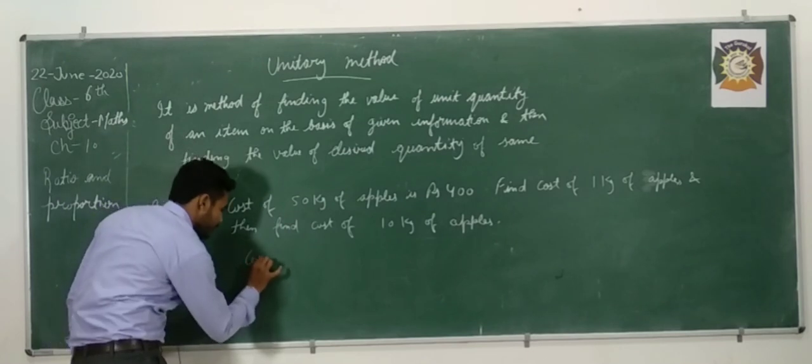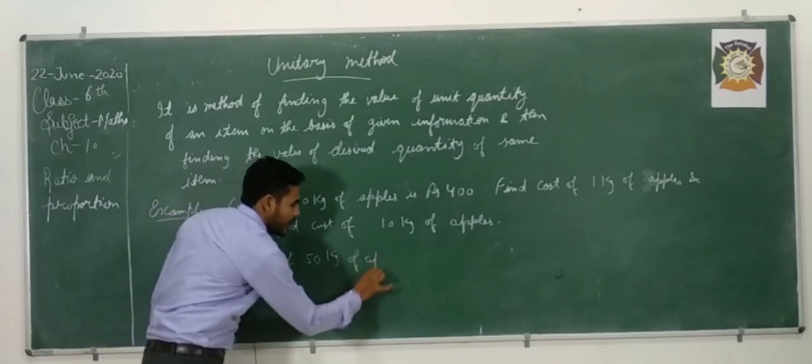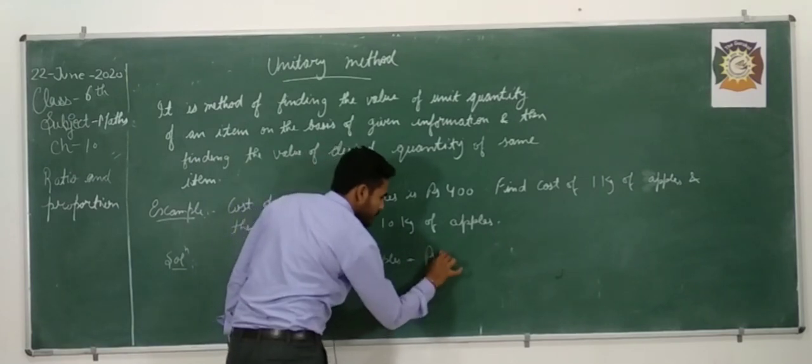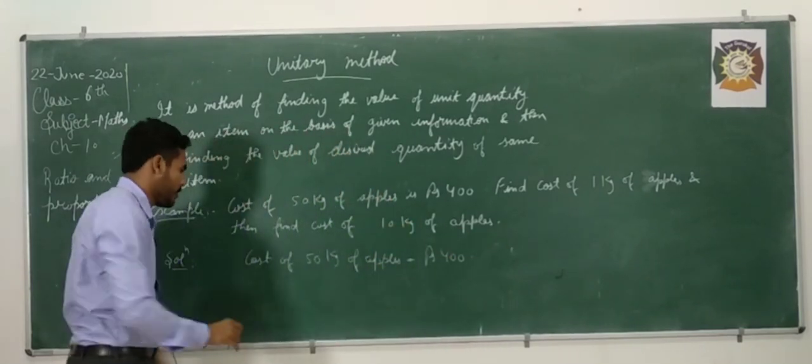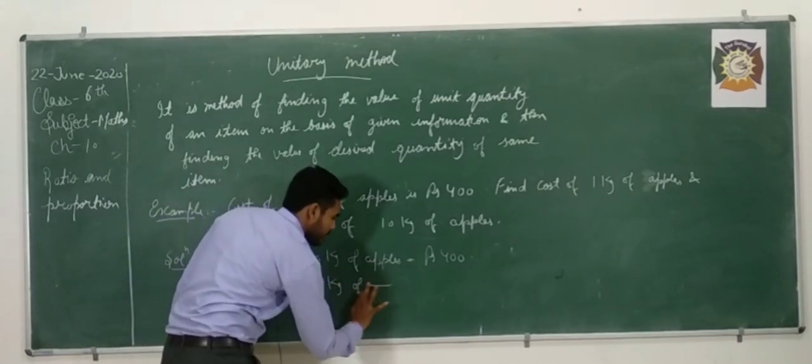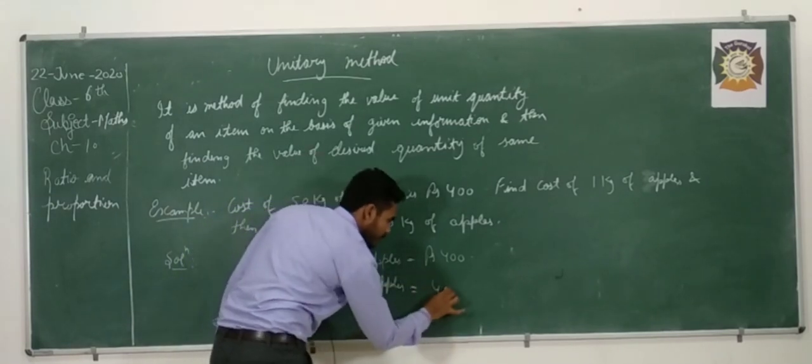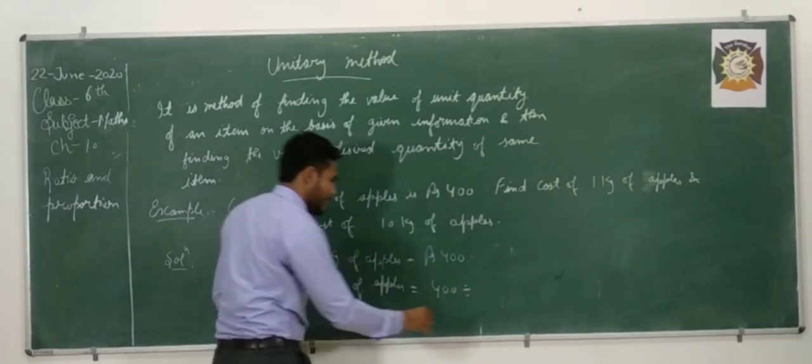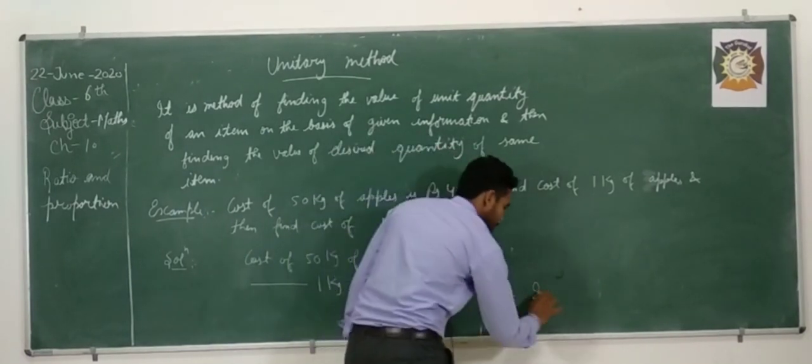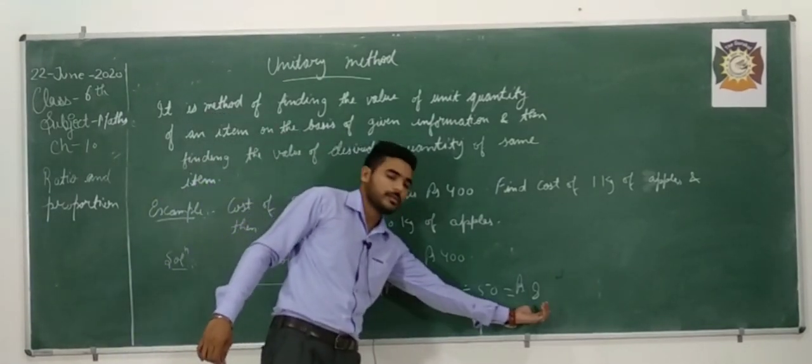Cost of 50 kg of apples, that is equal to Rs. 400. Now, cost of 1 kg of apples, that is equal to 400 divided by 50.